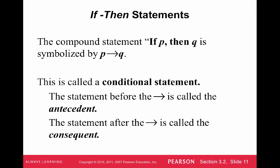Now we have if-then statements. We've had and statements (conjunctions) and or statements (disjunctions). If-then statements are called conditional statements. The compound statement 'if P then Q' is symbolized by P → Q. The arrow kind of just means 'then,' with an implied 'if' in front of P. The statement before the arrow is called the antecedent, and the statement after the arrow is called the consequent.